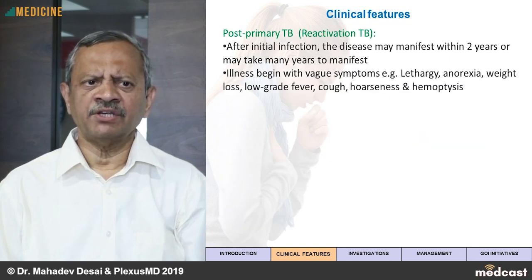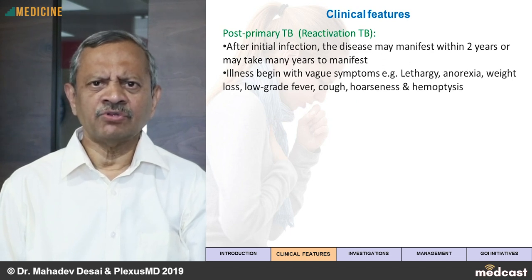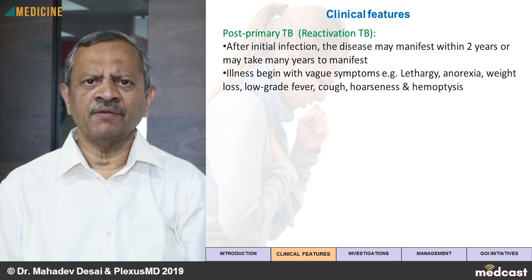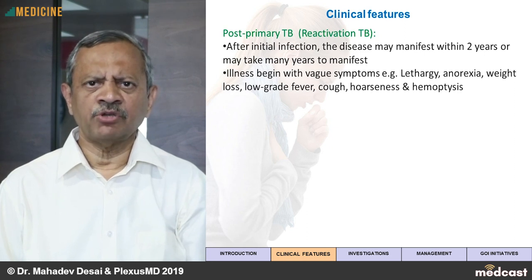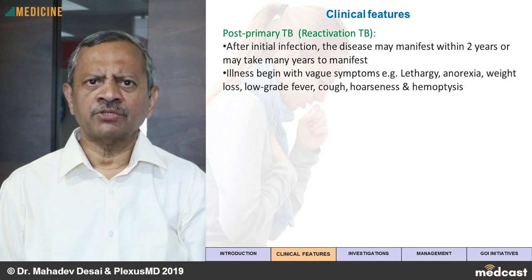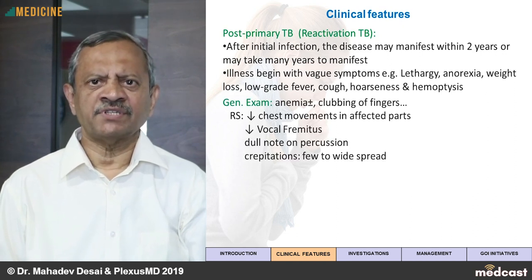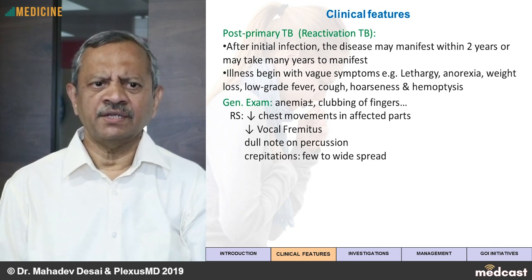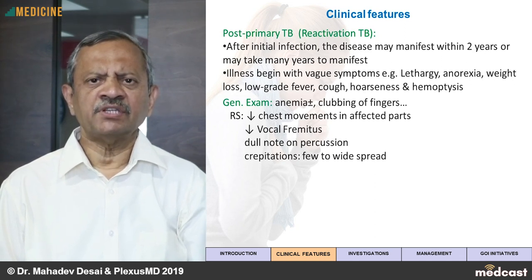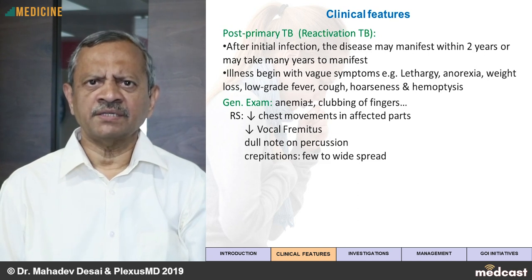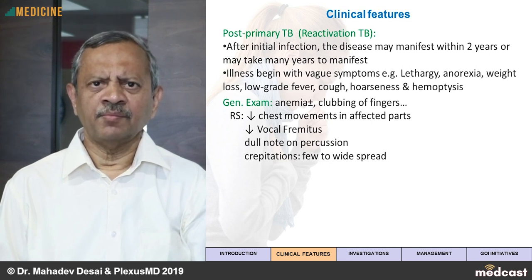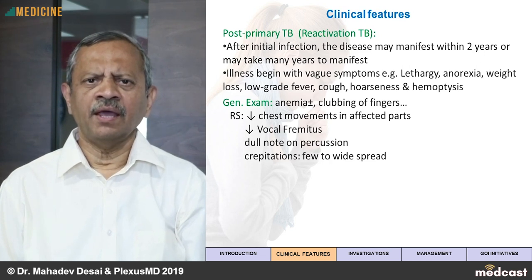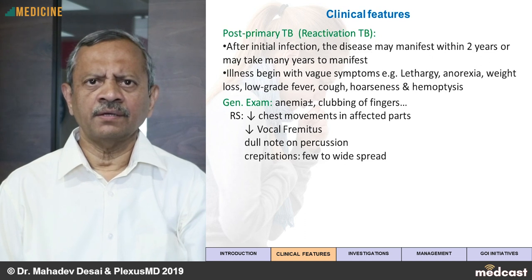Post-primary or reactivation tuberculosis has a very gradual onset and usually develops within either the first 2 years of the primary infection or may take many years of latency before manifesting. Symptoms are very vague to begin with — patients may complain of anorexia, lethargy, weight loss and low-grade fever. It is only when they develop cough, hemoptysis or hoarseness of voice that they bring these symptoms to the notice of a doctor. On examination, there may be anemia, clubbing of fingers, decreased chest movements on the affected side, reduced vocal resonance, dull note on percussion due to underlying consolidation or fibrosis, and a few widespread crepitations. Findings are very nonspecific and you need a high index of suspicion to initiate investigation.